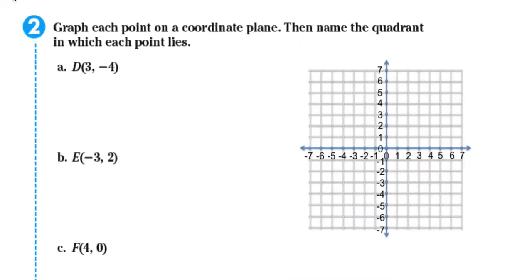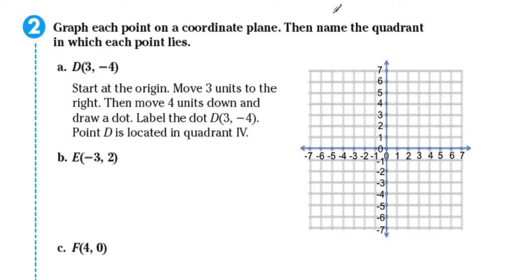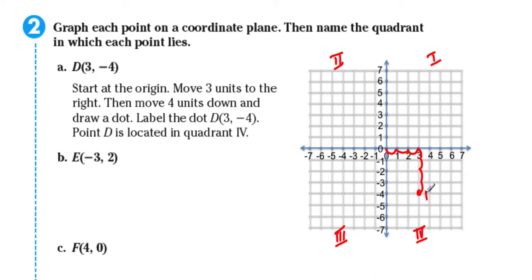Let's take a look at example number two. Graph each point on the coordinate plane and name the quadrant in which each point lies. For point three, negative four: start at the origin, move three units to the right, then move four units down and draw a dot. Point D is located in quadrant four, because quadrant one is upper right, quadrant two is upper left, quadrant three is lower left, and quadrant four is lower right.